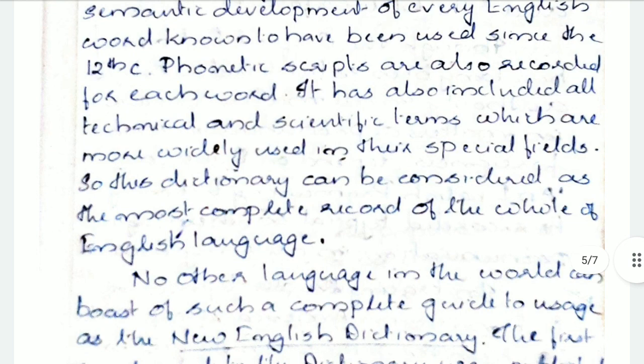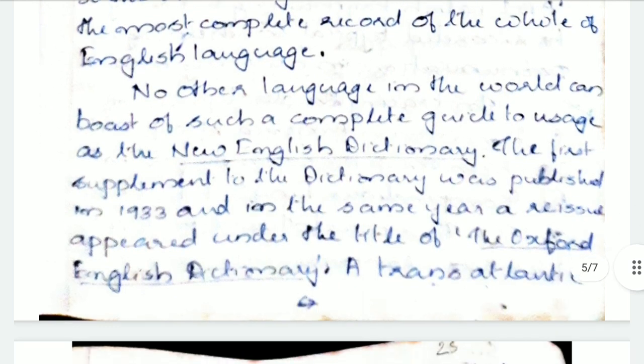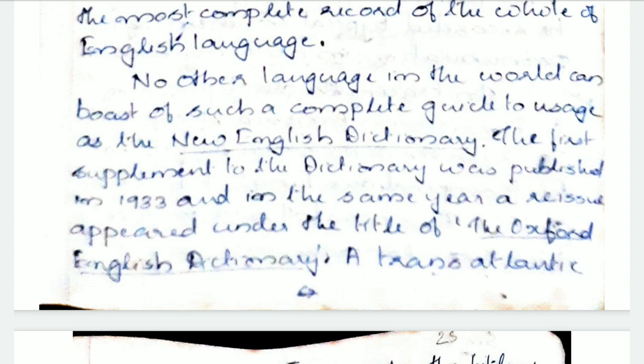Phonetic scripts were also recorded. Of course, there is a difference between the spellings and pronunciation of Old English, Middle English, and Modern English — all these things were recorded. It has also included all technical and scientific terms, which have emerged in the 18th and 19th centuries. We talked about those things while we discussed word formation, which are more widely used in enriching the vocabulary. No other language in the world can boast of such a complete guide to the usage as the New English Dictionary.